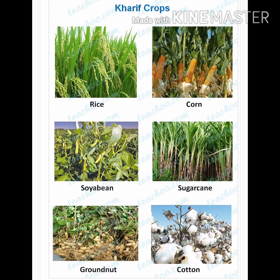Main Kharif crops are rice, corn, soybean, sugarcane, groundnut, cotton, millet, maize, etc.